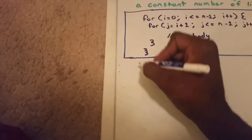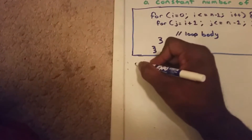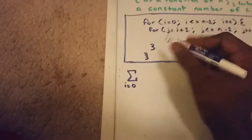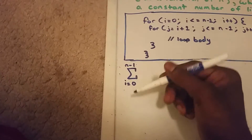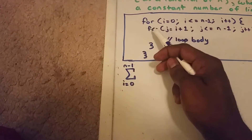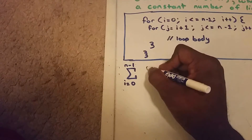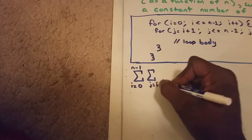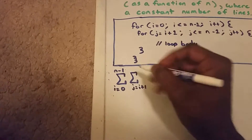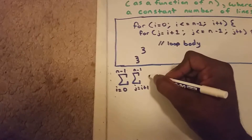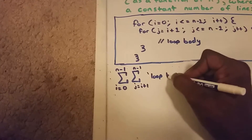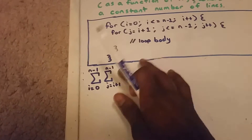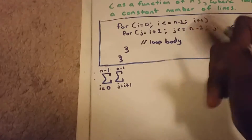So let's get started. First, we want to rewrite the outer loop as a summation. It runs from i equals zero to n minus one, because it can be less than or equal to n minus one. Then we have an inner summation that runs from j equals i plus one to n minus one. Inside that, we have our loop body, which is a constant number of lines, so we're going to choose the constant one.